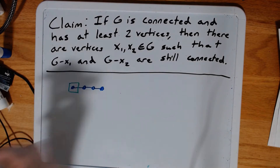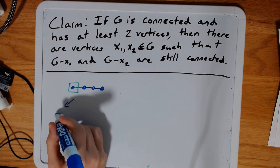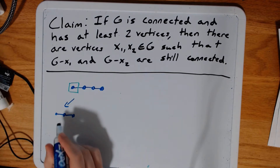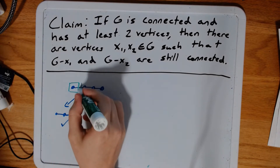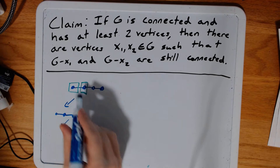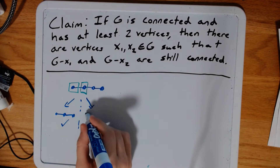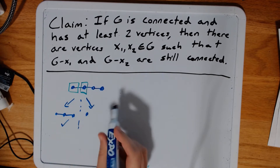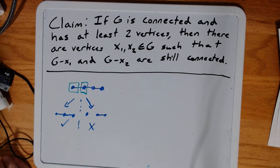So let's start with this one on the end. If we remove it, then we're left with the other three vertices in one component — that's still connected. Now let's think about what happens if we remove the next one. Here, something a little different happens: we get this vertex on its own, and then we get these two. So this is not connected.